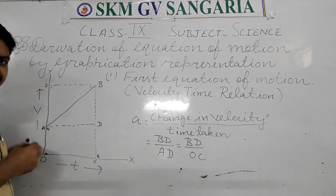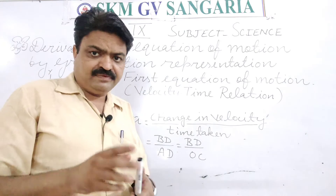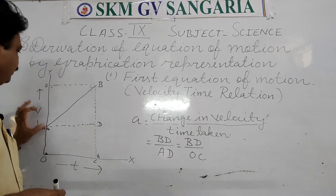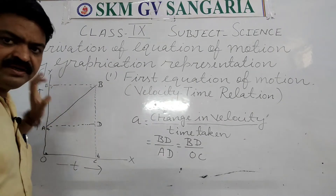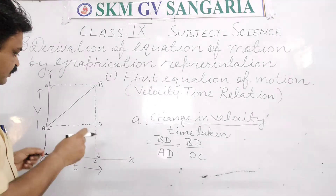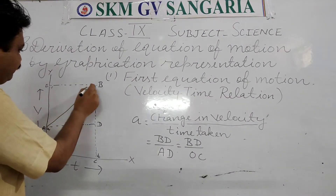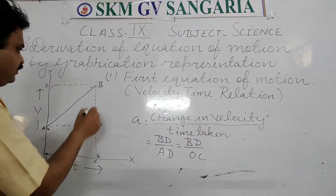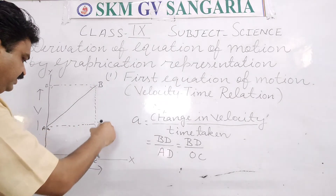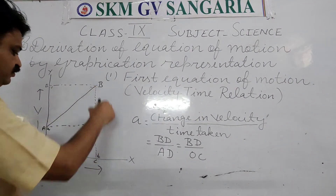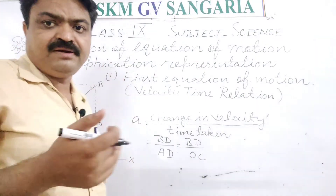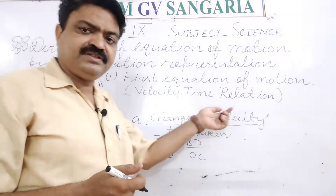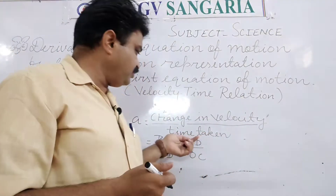So there are two velocities we get: initial velocity and final velocity. We will draw one parallel line parallel to the time axis, and also draw another parallel line. We draw a line from B to C. With the help of this, we know that acceleration equals change in velocity upon time taken.